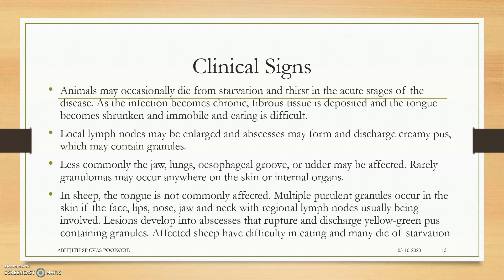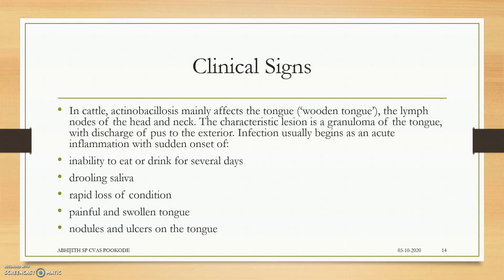The clinical signs: animals may occasionally die from starvation and thirst in acute stages, because they cannot eat or move their tongue properly. They cannot produce proper salivation or digest properly. In the esophageal groove, lesions are produced which can lead to rupture of the esophageal valve, forming abscesses that discharge yellow-green pus containing granules with sulphur. There is rapid loss of condition, painful and swollen tongue, and drooling saliva.